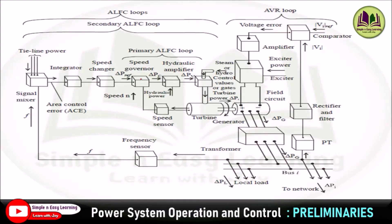If the differential speed is high, the control valve starts closing so that the speed of steam flow is reduced, thereby reducing the speed of the turbine as well. This control of speed in turn controls the frequency, since speed is directly proportional to frequency. In this primary ALFC loop, the speed of operation is very fast — it occurs in one to several seconds. Thus, to maintain a megawatt balance, this primary loop performs frequency control, also called speed control.